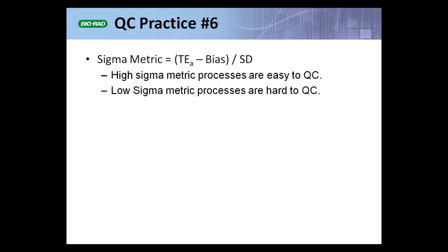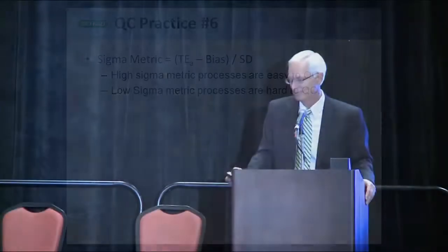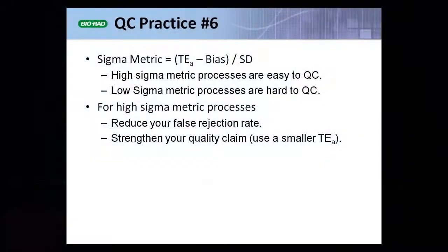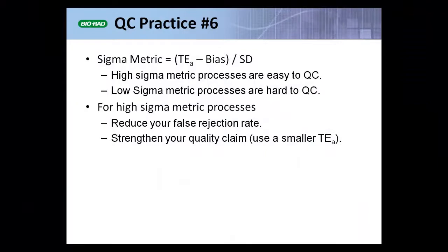You get a number. High sigma metric processes are easy to QC; low sigma metric processes are hard to QC. By dividing analytes into low and high groups, you have an opportunity to treat them differently. For high sigma metric processes, you can reduce your false rejection rate, reduce the cost of false rejections, and potentially strengthen your quality claim by specifying a smaller allowable total error.